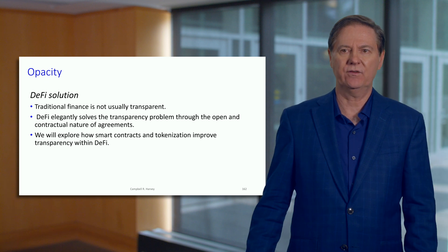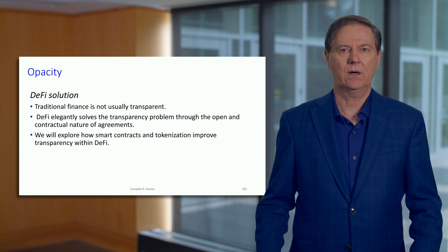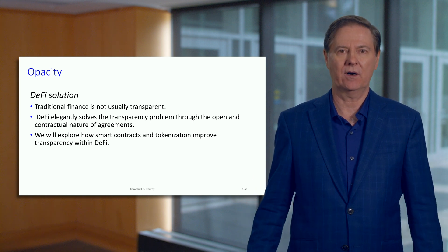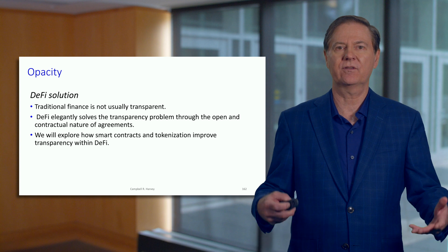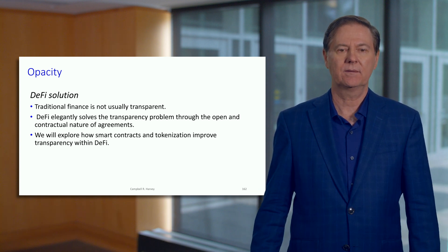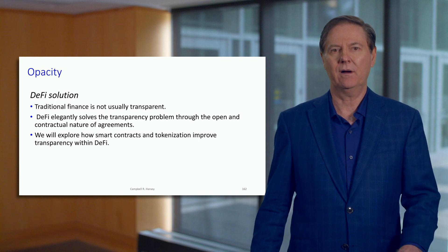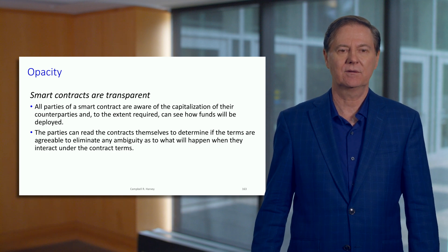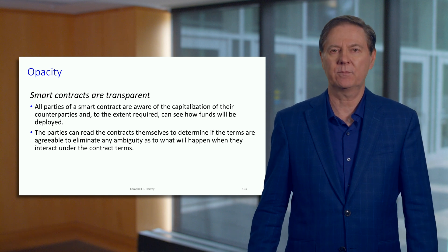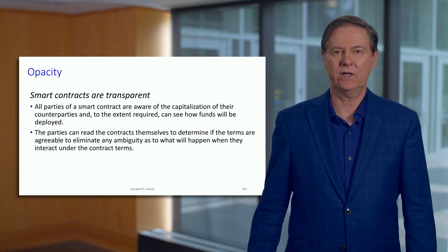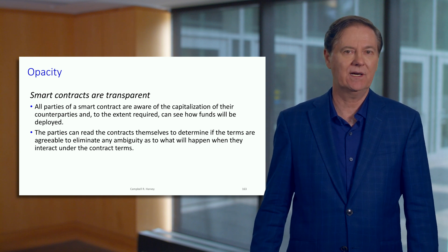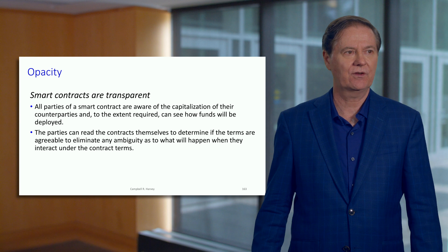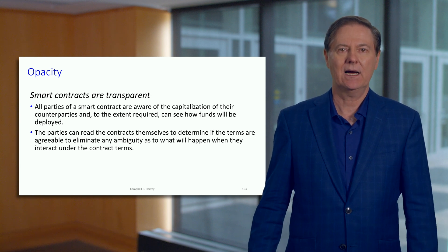In decentralized finance, everything is transparent. The smart contract is open for anybody to look at. You know exactly what the balances are of all the contracts and the players — this is completely open. So when a smart contract holds a balance, as in my example of the DFT token and some USDC, anybody can check the balance. Think of this as knowing exactly how much your counterparties have.